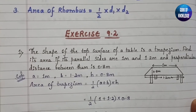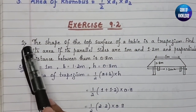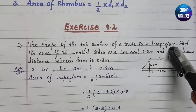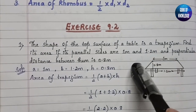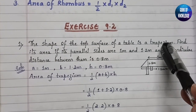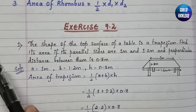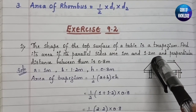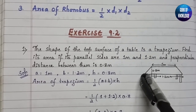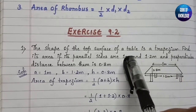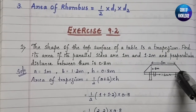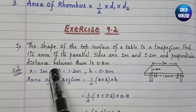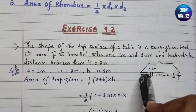Question 1: The shape of the top surface of a table is a trapezium. Find its area if its parallel sides are 1 meter and 1.2 meters, and the perpendicular distance between them is 0.8 meter.